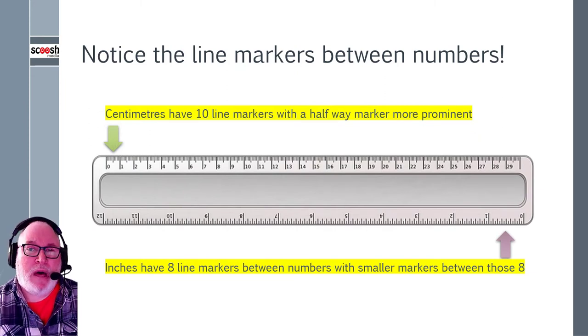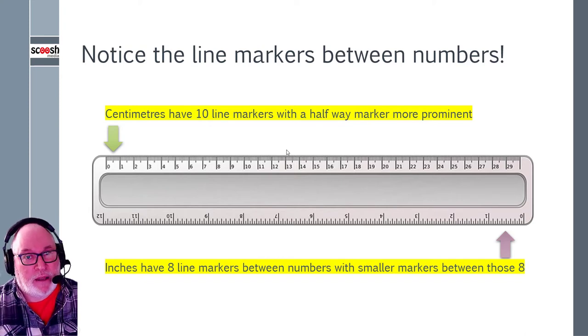So there we go. If you notice there's more markings between each of these as well. So if we have a look at the centimeters and we can see that it's 10 markings, if you count them. So one, two, three, four, five. Okay, there's five there. So that's halfway. Six, seven, eight, nine, ten. So there's 10 markings between each of the numbers. That would then give you point with the tenths.